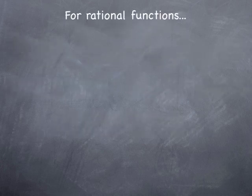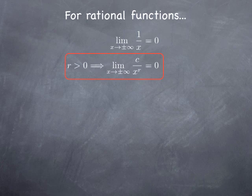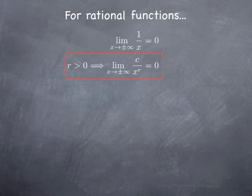So for rational functions, since we have a quotient of two polynomials, we might start by looking at a very simple example: 1 over x. Of course, if x grows without bound, 1 over something going to infinity is going to go to 0. Similarly, if I take a positive power of the variable x and x goes to infinity, and c is a non-zero constant, then c divided by x to the r, where r is positive, is going to go to 0 as well.